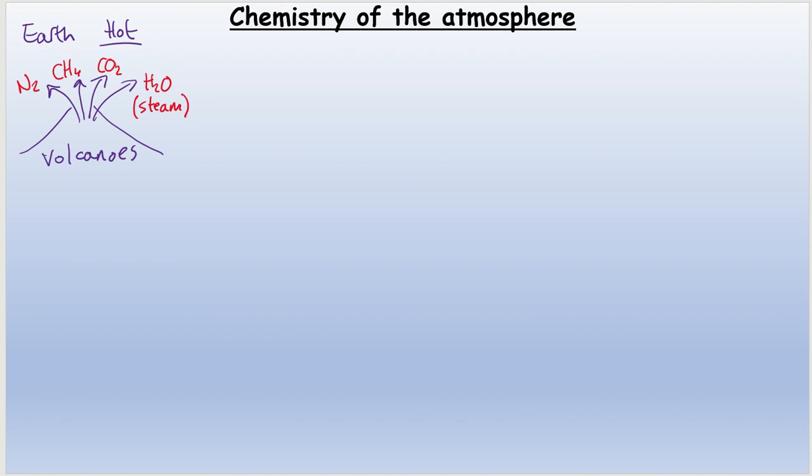All of these gases that were being produced built up and formed the atmosphere. That early atmosphere of the Earth would be similar to what today we would talk about for Mars or Venus, for example.